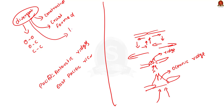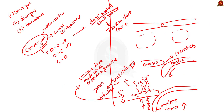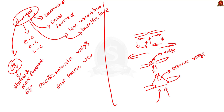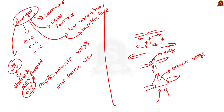Oceanic ridges are also prone to earthquakes. The key difference between earthquakes at convergent and divergent boundaries is that along the convergent boundary, earthquakes have deep focus, whereas along the divergent boundary, earthquakes have shallow focus, but are more frequent. Here, the earthquake occurs when fractures appear as the two plates move apart from one another.